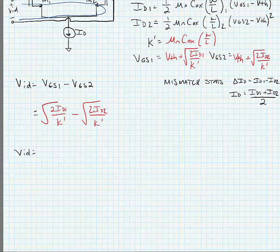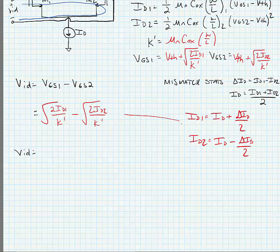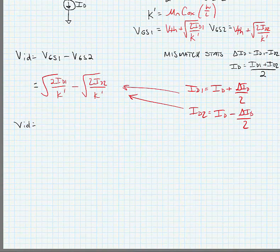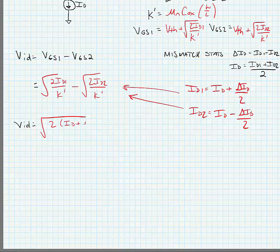ID is equal to the average of the two currents. So if we substitute in ID1 equals ID plus delta ID over 2, and ID2 equals ID minus delta ID over 2, into the expression we just developed, we can get that the differential input voltage is equal to the square root of 2 divided by K prime, minus...